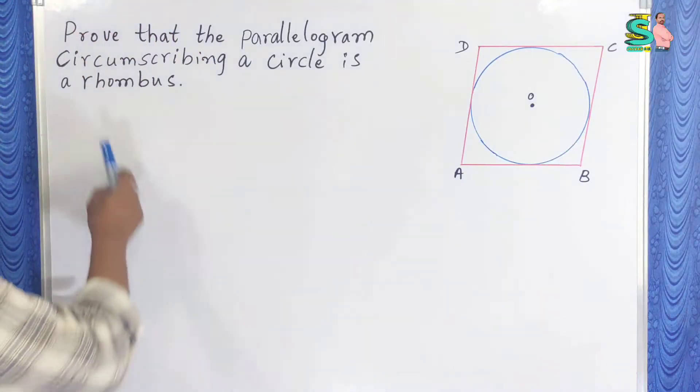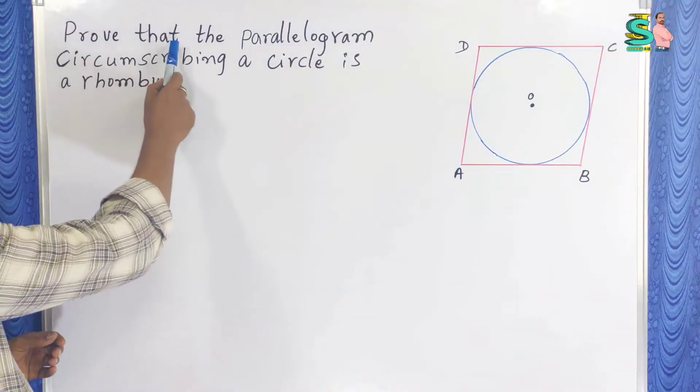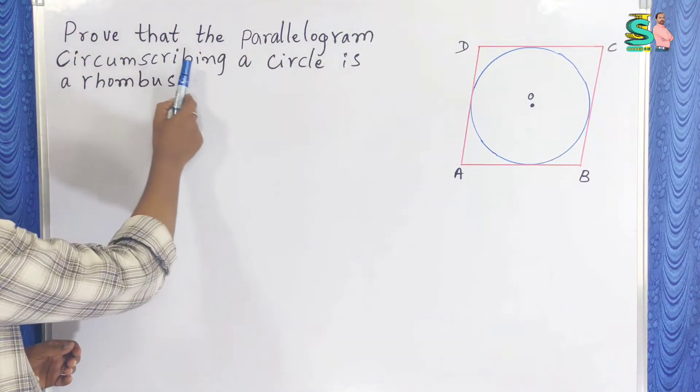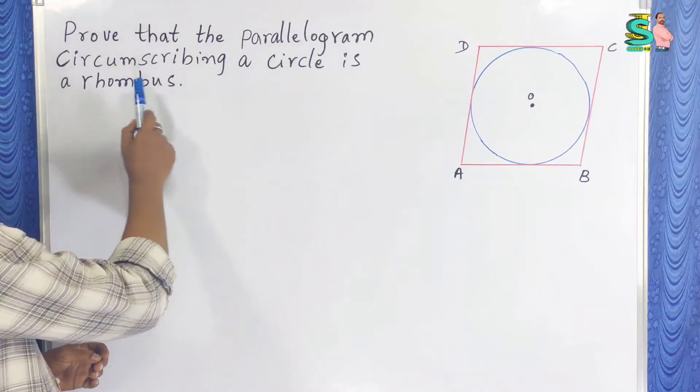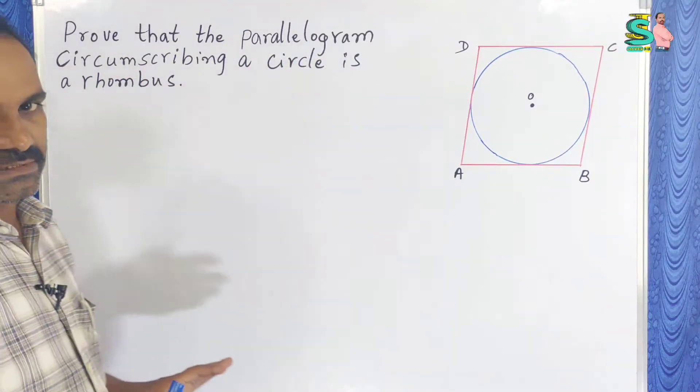What is that question? Prove that the parallelogram circumscribing a circle is a rhombus.